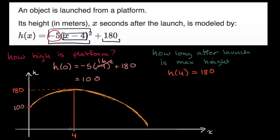Now the last question I'll ask you is how long after launch do we get to a height of zero? For what x makes our height zero? Well, to do that, we have to solve h of x equals zero. Or we can write negative five times x minus four squared plus 180 equals zero.